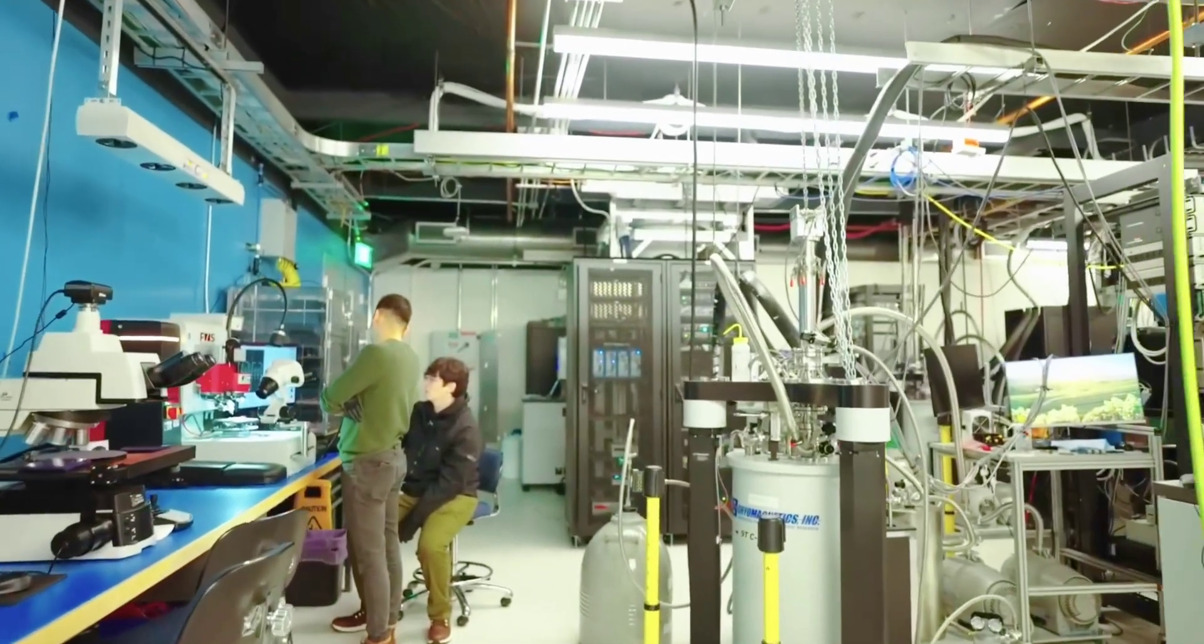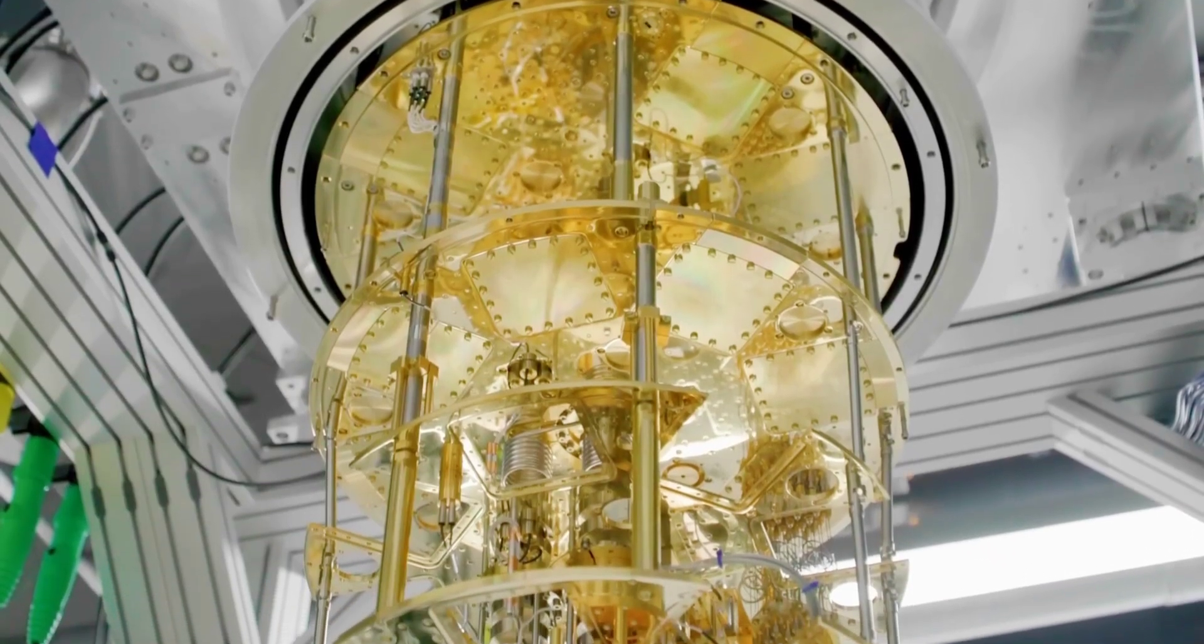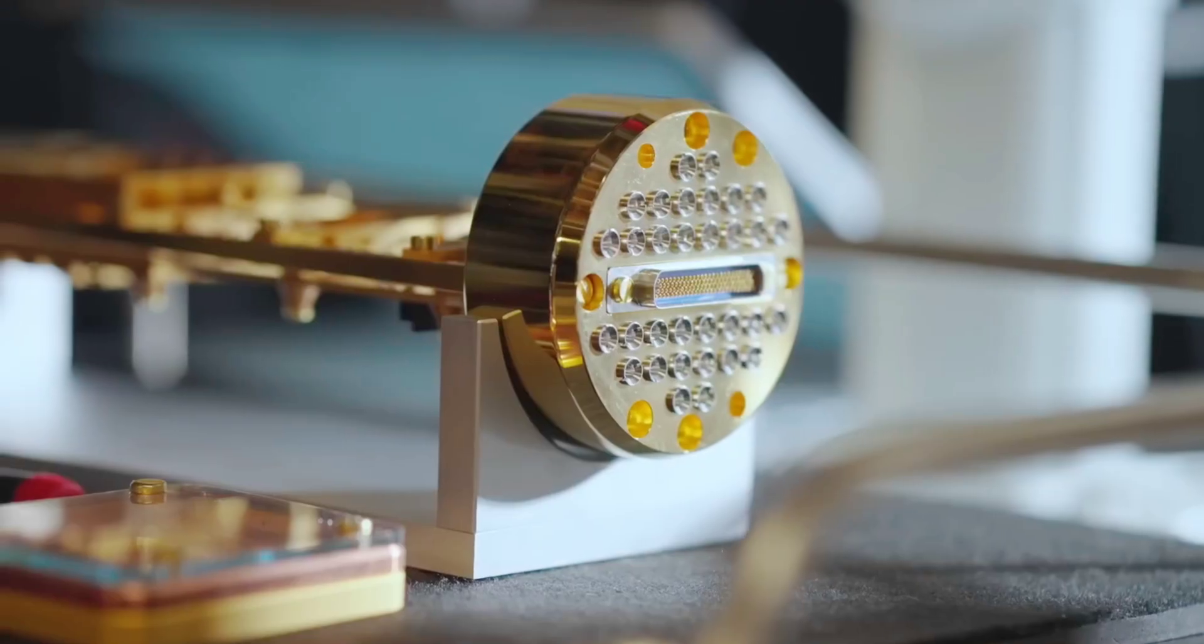The researchers built a special device using two materials, indium arsenide and aluminum. This setup allows them to measure an important property called fermion parity, which tells whether the system has an even or odd number of electrons.